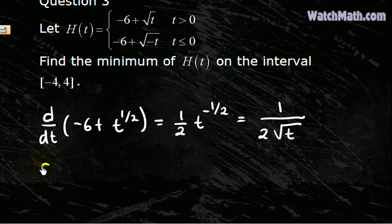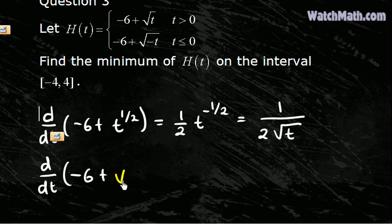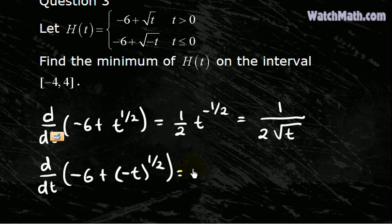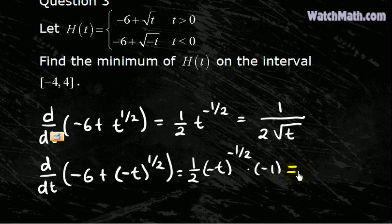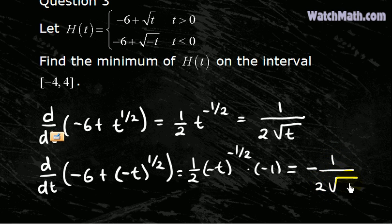Similarly, the derivative with respect to t of the second piece of the function — here we need to use the chain rule, multiplying by the derivative of negative t — and we can rewrite this as negative 1 over 2 square root of negative t.